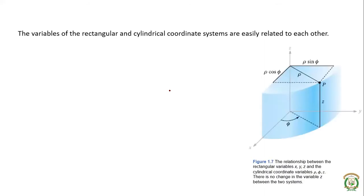Consider a point on the cylindrical coordinate system — it lies on the surface of a cylinder. If you drop a perpendicular from that point down to the x-y plane and join it to the origin, the angle it makes is phi, the azimuthal angle. The distance of point P from the z-axis is rho — the radius of the cylinder — and this distance is perpendicular to the z-axis. We need to find the x and y components.